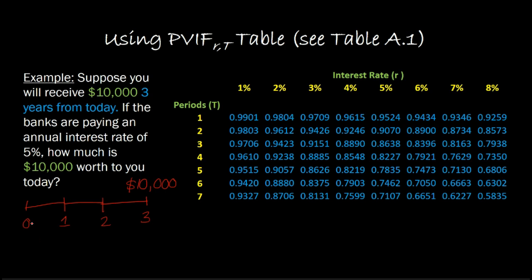If you want to find the present value of this $10,000, the formulaic way is: PV = 10,000 / (1.05)^3. This would be the formulaic approach to this problem, and you would get $8,638.37. So this is one way of doing it.